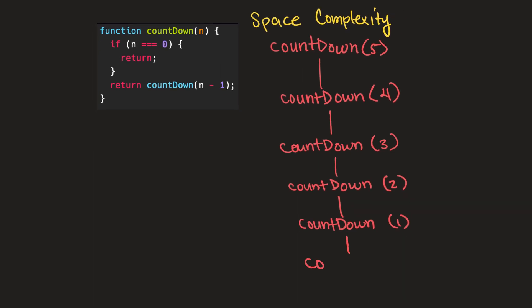Finally, we get to the call where we're passing zero as our n to the function. At this point, if n is equal to zero, the function will just return.